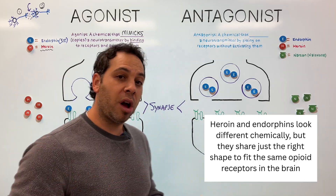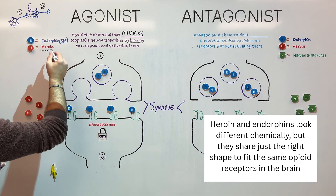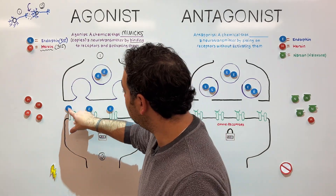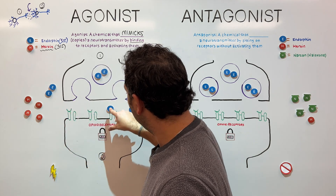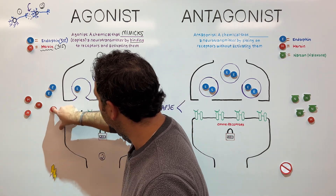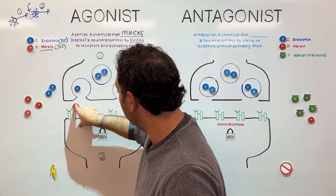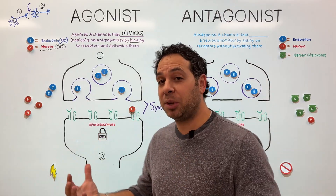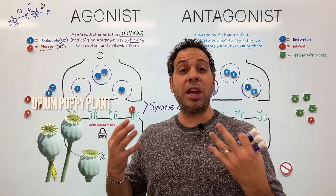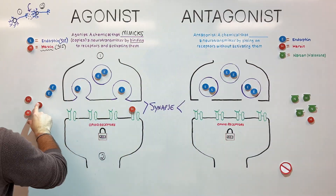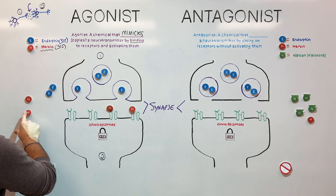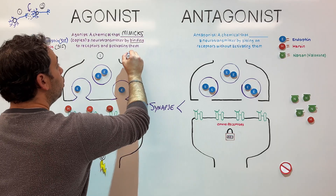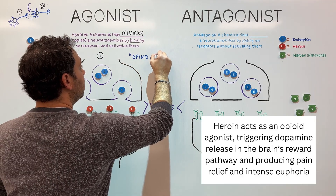Heroin is a very strong narcotic that has the same key — the same combination as opioid receptors. Scientists have discovered that chemical compounds from the opioid poppy plant — opium, hence opioid receptors — activate the same receptors as endorphins. Heroin has such a strong affinity that it kicks out endorphins and binds to those receptors instead, activating them, opening them up, and firing an action potential. So in this case, we can call heroin an opioid agonist.